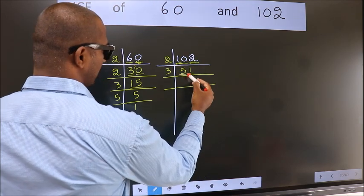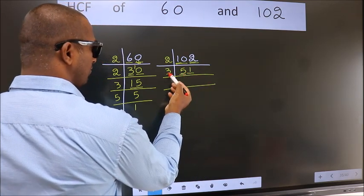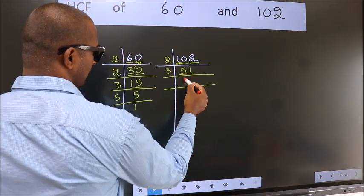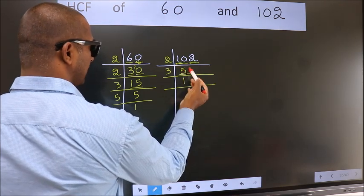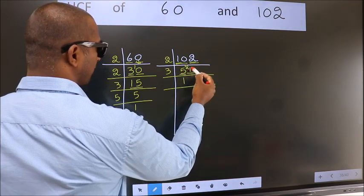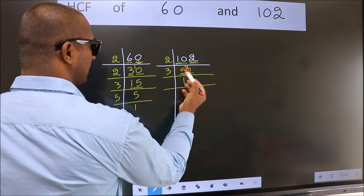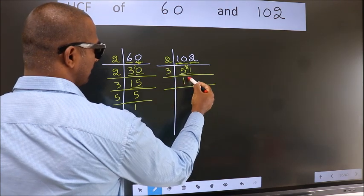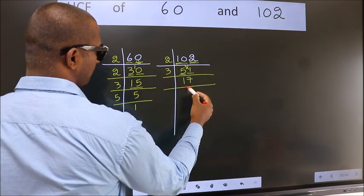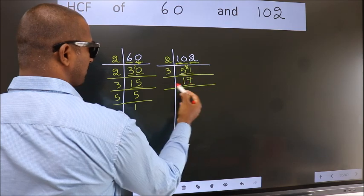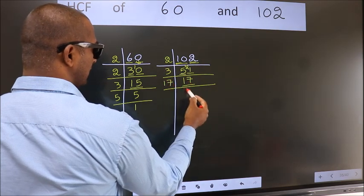First number 5, a number close to 5 in 3 table is 3 once 3. 5 minus 3, 2. 2 carried forward 21. When do we get 21 in 3 table? 3, 7 is 21. Now 17 is a prime number, so 17 once 17.